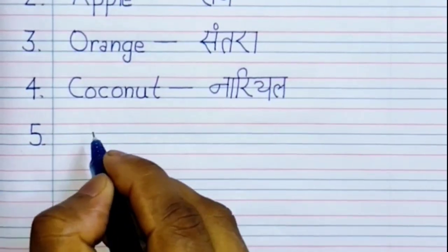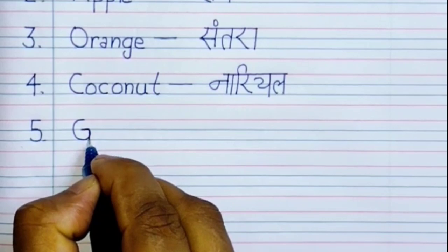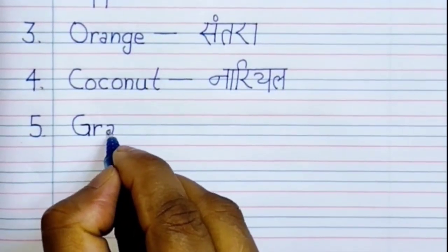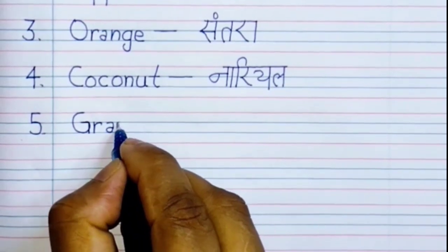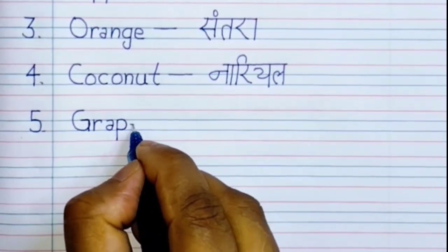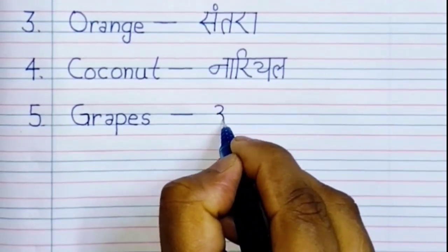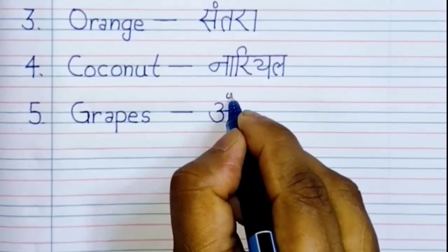Number 5, Grapes. G-R-A-P-E-S. Grapes. Grapes means angoor.